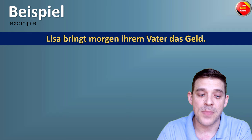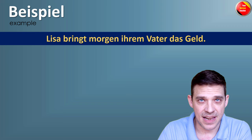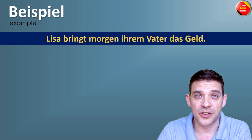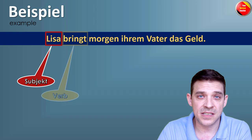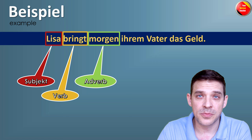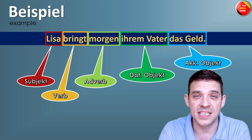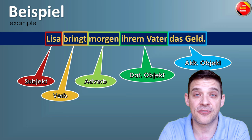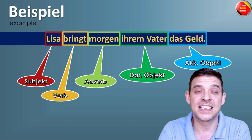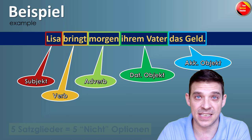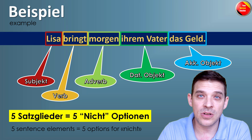Let's make an example. 'Lisa bringt morgen ihrem Vater das Geld' — tomorrow Lisa will bring the money to her father. We have here: SUBJECT, VERB, ADVERB at position 3, DATIVE OBJECT, and AKKUSATIV OBJECT. We have five sentence elements. And because we have five sentence elements, this means we have also five options — five places where we can put the NICHT.